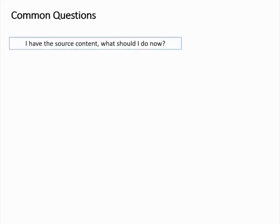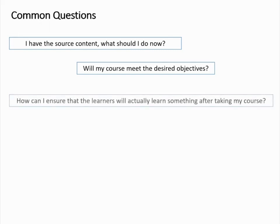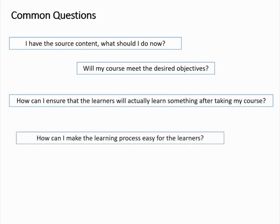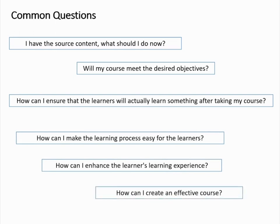When we start creating a course, some common questions that come to our mind are: I have the source content, what should I do now? Will my course meet the desired objectives? How can I ensure that the learners will actually learn something after taking my course? How can I make the learning process easy for the learners? How can I enhance the learners' learning experience? How can I create an effective course? Let's see how Gagné's 9 events of instruction can help in providing answers to your questions.